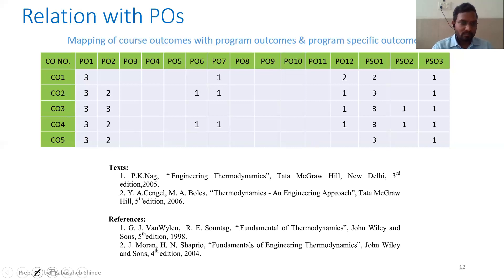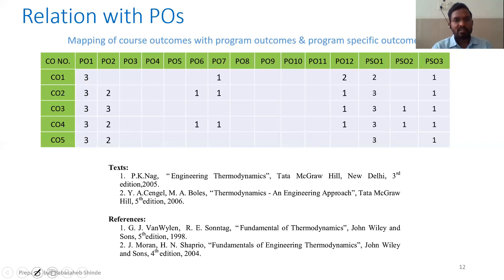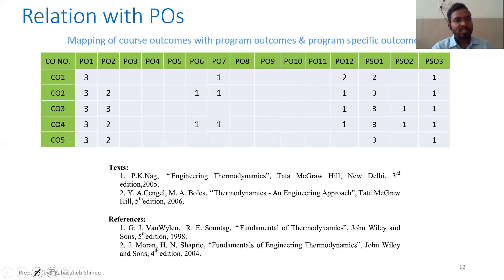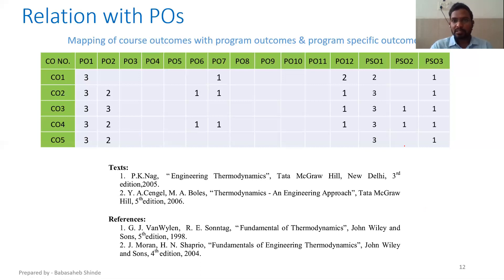Now the last part: textbooks. The university has prescribed two textbooks — Engineering Thermodynamics by P.K. Nag, and Thermodynamics: An Engineering Approach by Cengel and Boles. In addition, I suggest one more book: Textbook of Engineering Thermodynamics by R.K. Rajput, which is also a good reference. Two reference books are also listed: Fundamentals of Thermodynamics by Borgnakke and Sonntag, and Fundamentals of Engineering Thermodynamics by Moran and Shapiro. We'll end our first session here and begin unit number one in the next session.